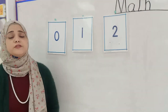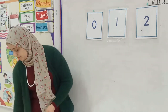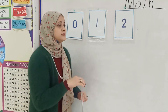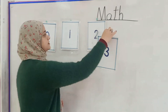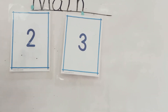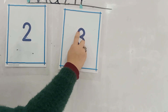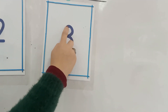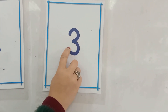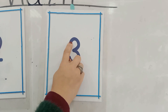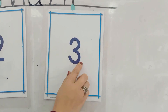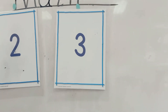What comes after number two, KG1? Yes, I hear someone say three. How do we write number three? Starting point, half a circle, half a circle. Again, starting point, half a circle, half a circle. Excellent.